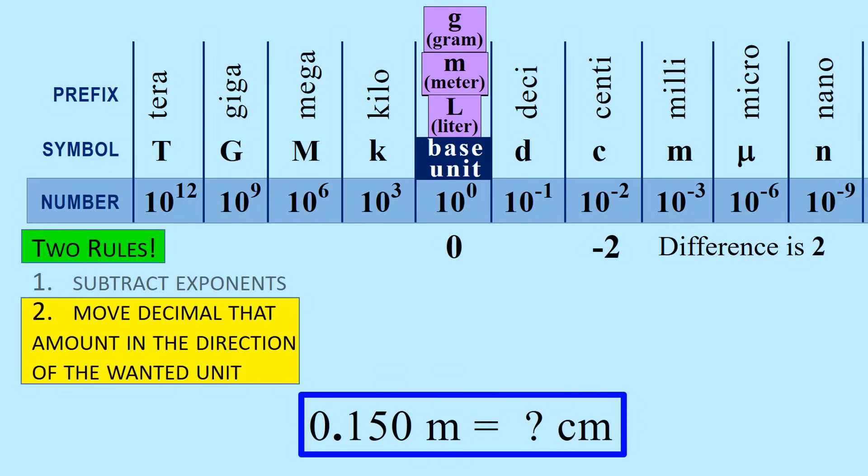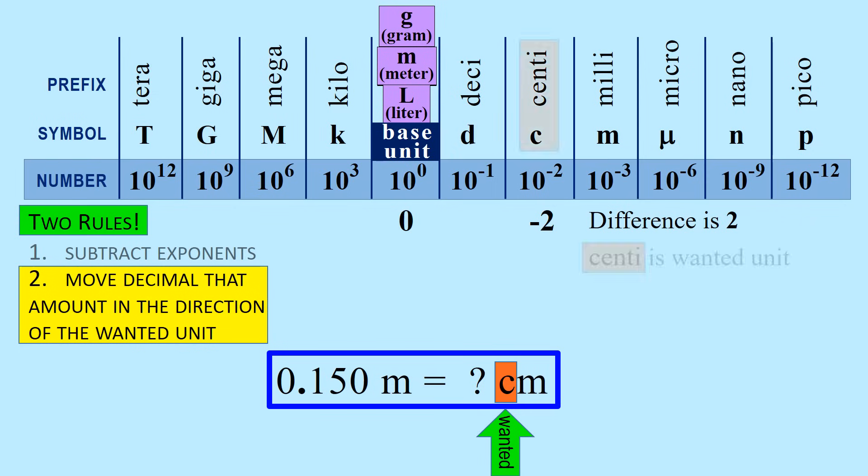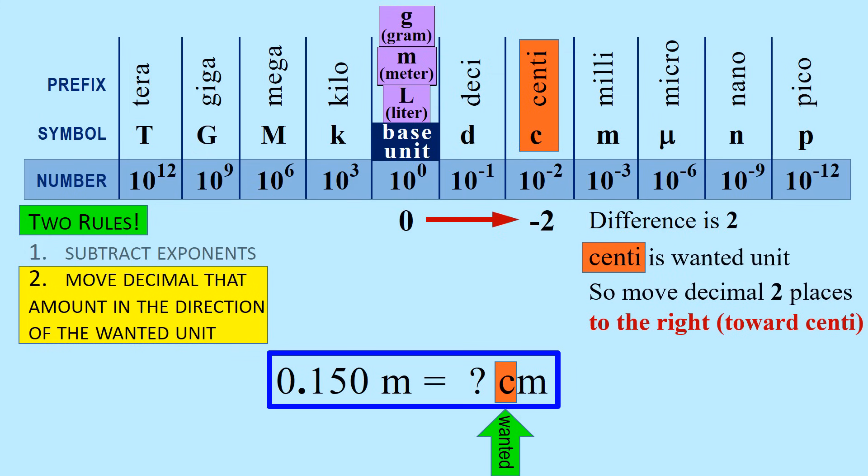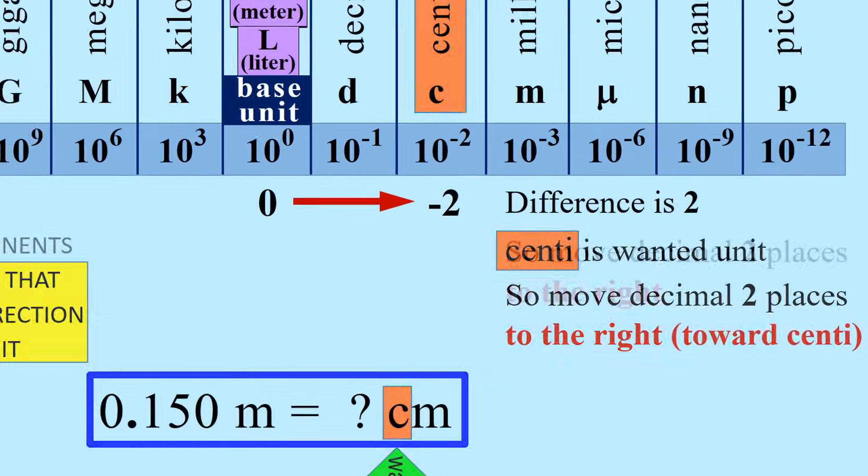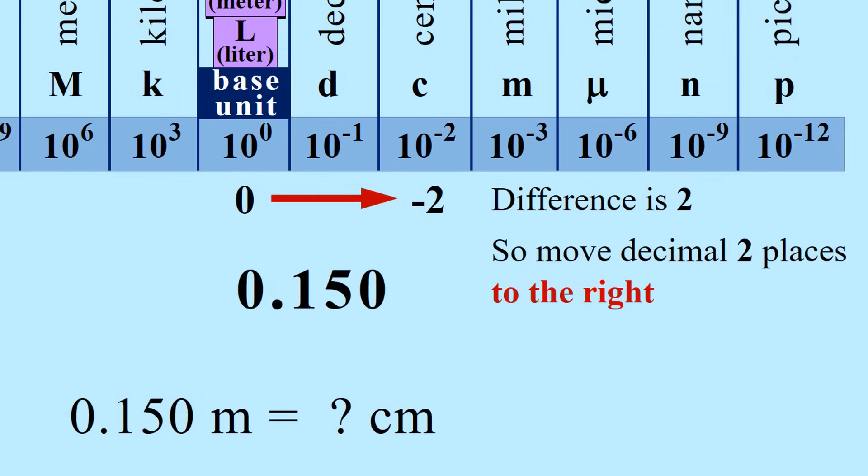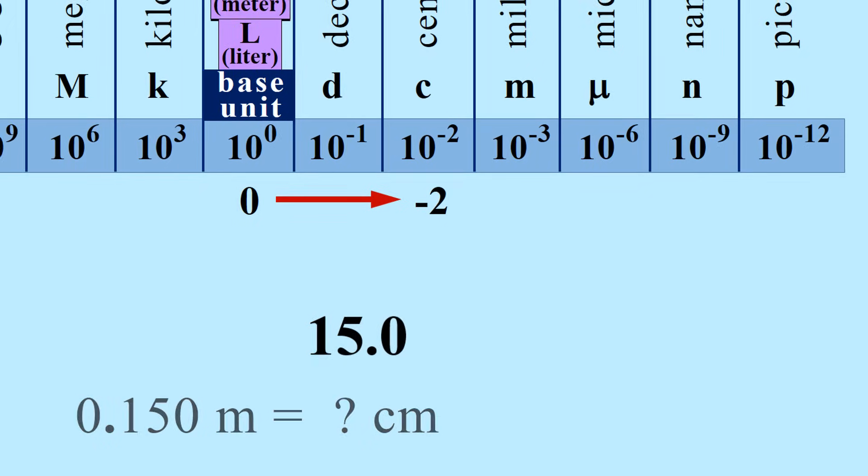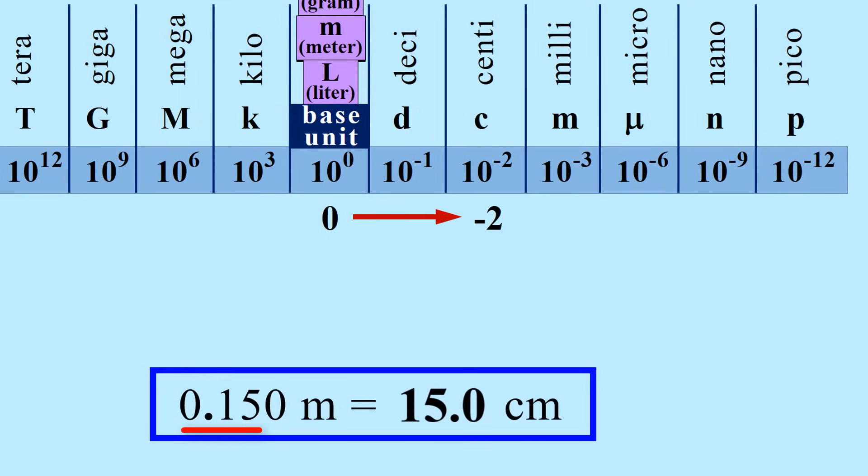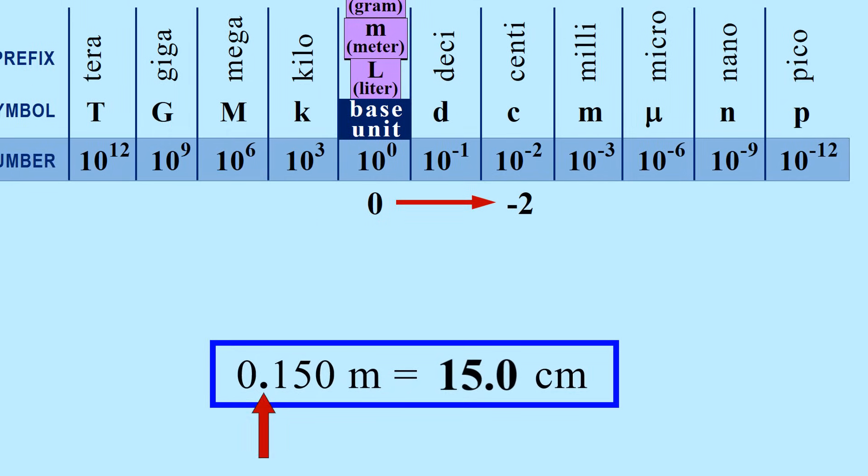Now we will move the decimal that amount in the direction of the wanted unit. Centi is wanted, so move the decimal two places to the right, which is toward centi. Beginning with 0.150, the decimal is moved two places to the right, giving 15.0 centimeters. 0.150 meters is equal to 15.0 centimeters. We have moved the decimal two places to the right.